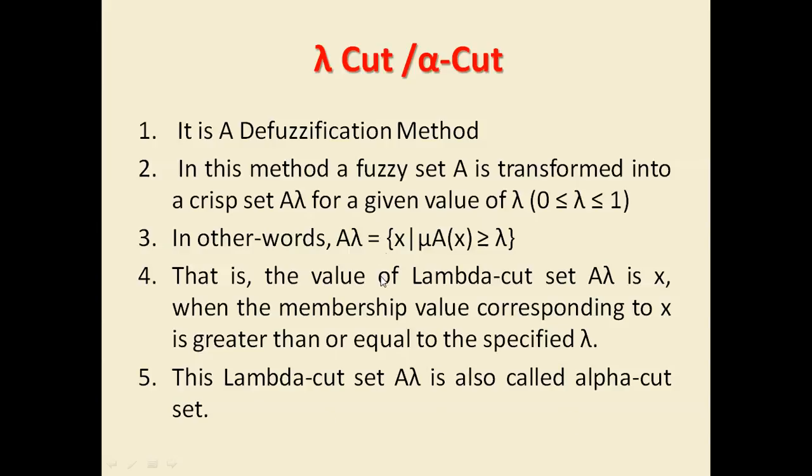How does it basically convert the fuzzy set into crisp set? In this method, fuzzy set A, we have a fuzzy set A that we want to convert into crisp set A lambda for a given value of lambda. Lambda's value will be between 0 and 1, where 0 ≤ λ ≤ 1.